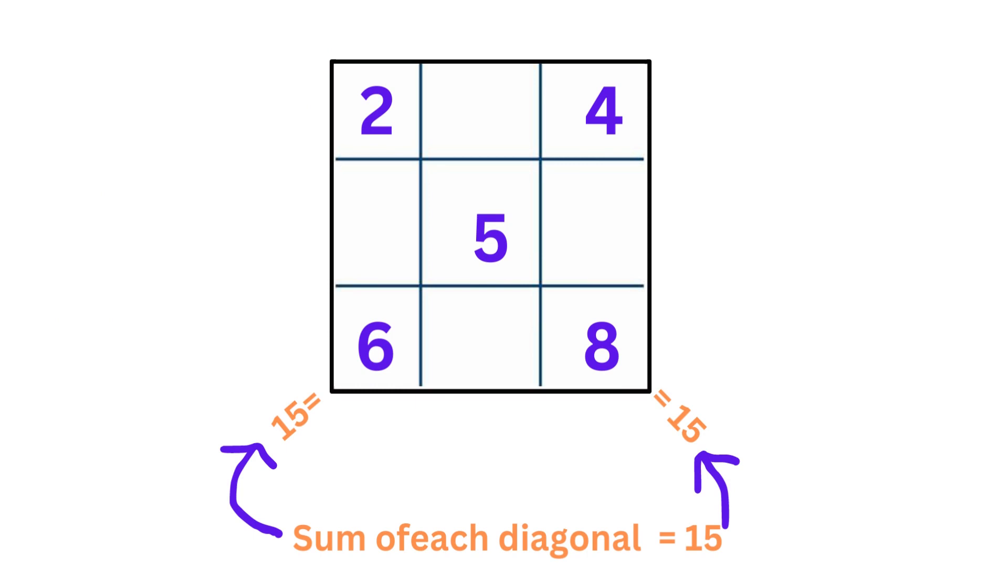Apply the same formula for diagonals as well. The sum of diagonals are equal to the sum of each row and column.